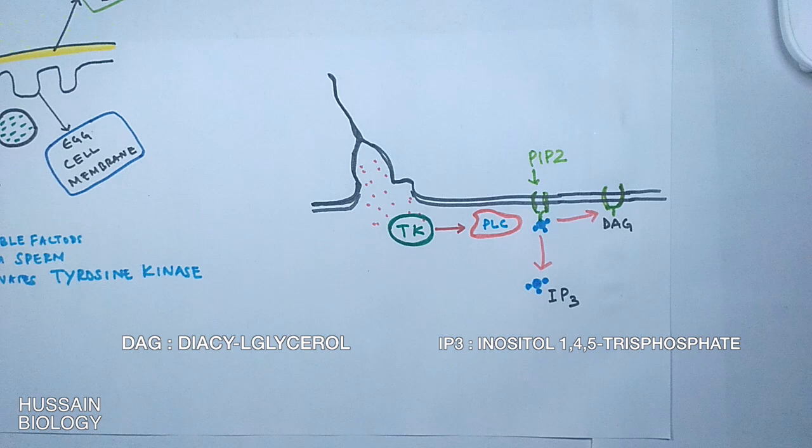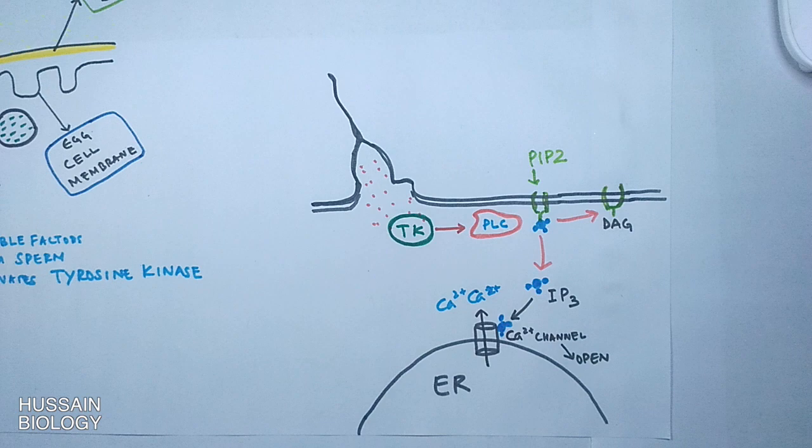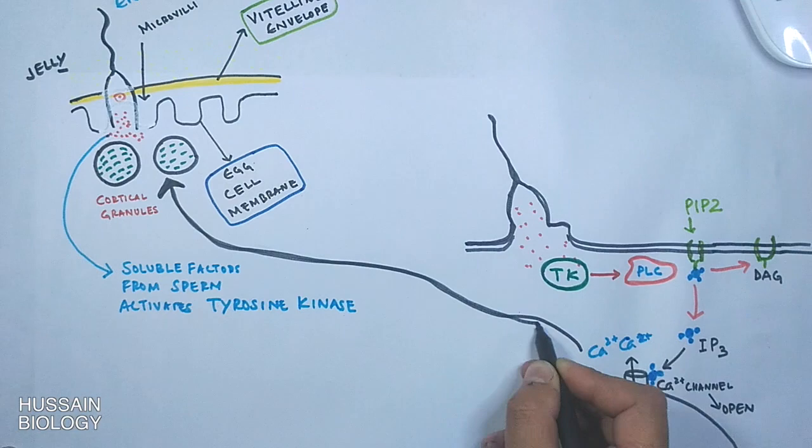The DAG (diacylglycerol) remains attached to the membrane, while IP3 (inositol trisphosphate) dissociates and travels to the endoplasmic reticulum, where it opens calcium ion channels. Calcium ions are then pumped out of the endoplasmic reticulum into the cytoplasm, increasing intracellular calcium levels, which aids in the exocytosis of cortical granules.